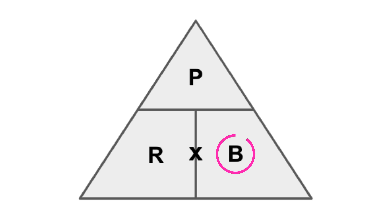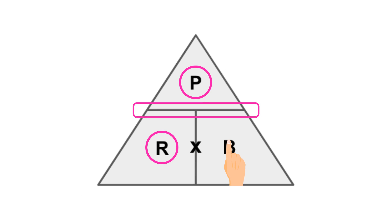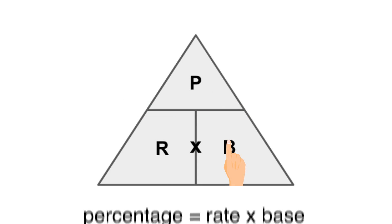So we cover the base, which leaves us with percentage over rate. This means in order to find the base, we divide the percentage by the rate. On the other hand, in order to find the percentage, we multiply the rate by the base.